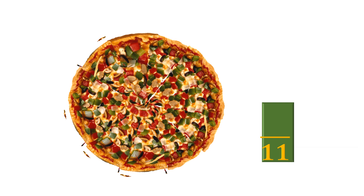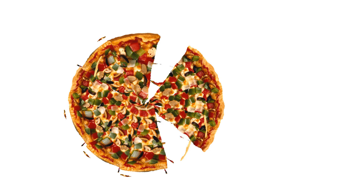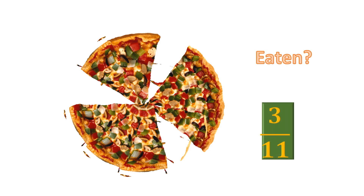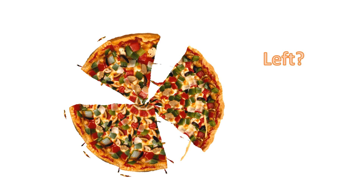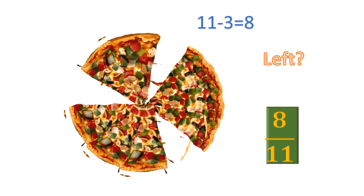Now we are going to eat some of the pizza slices — one slice, two slices, three slices. I have eaten three slices. So what fraction have I eaten of the pizza? I have eaten three over eleven. The total number was eleven and I ate three, so it's three by eleven. Can you tell me what fraction is left? Eleven minus three — the number of slices left is eight. So the fraction remaining is eight over eleven.